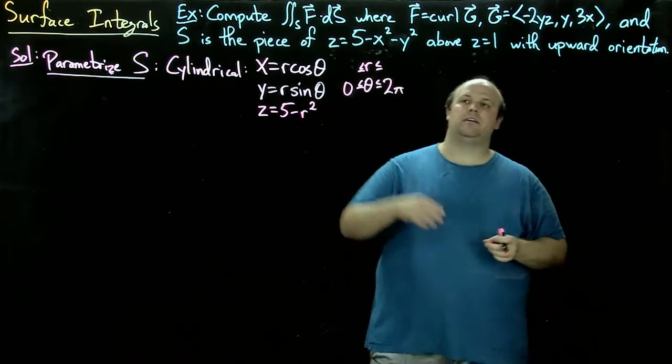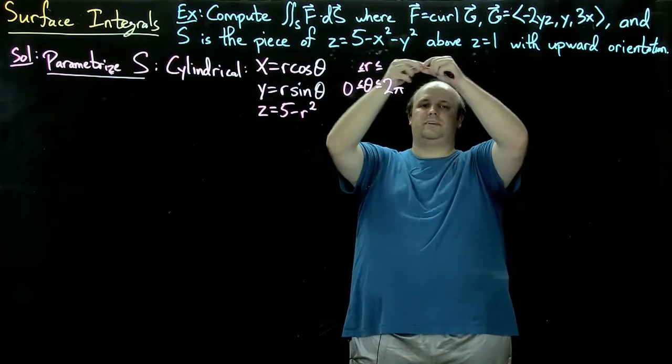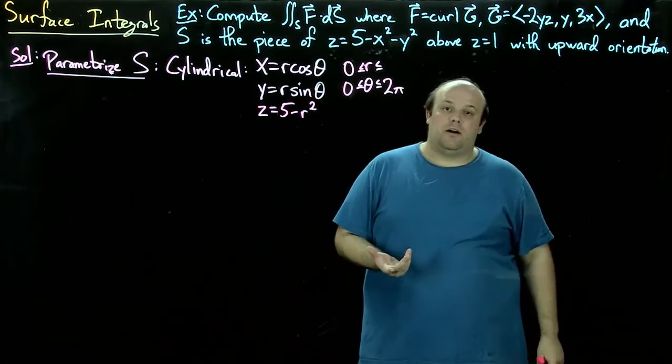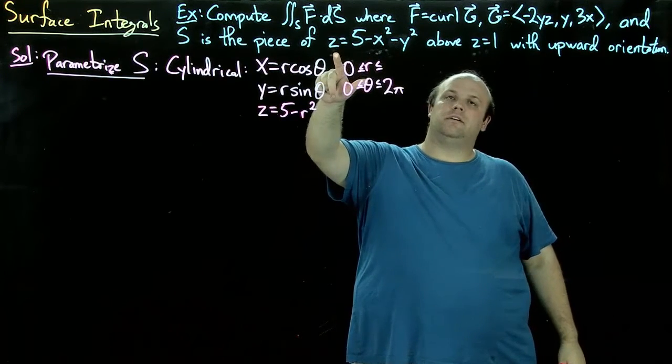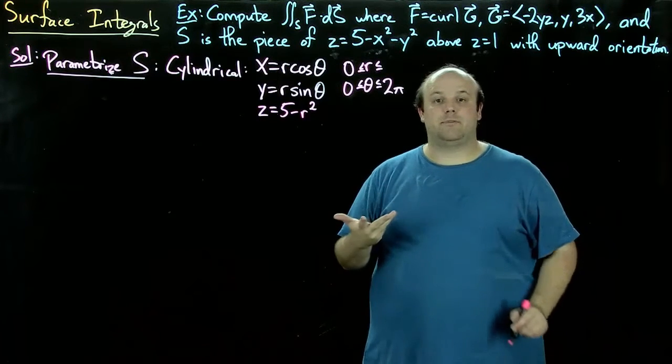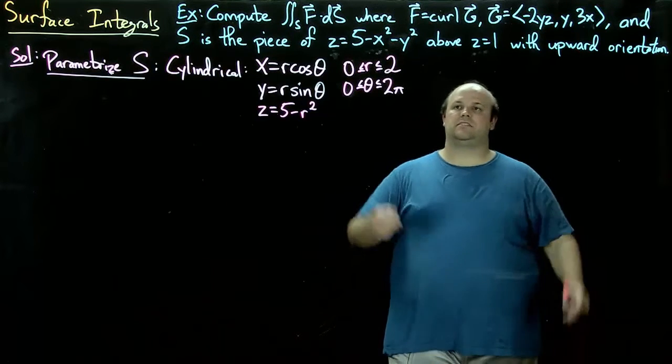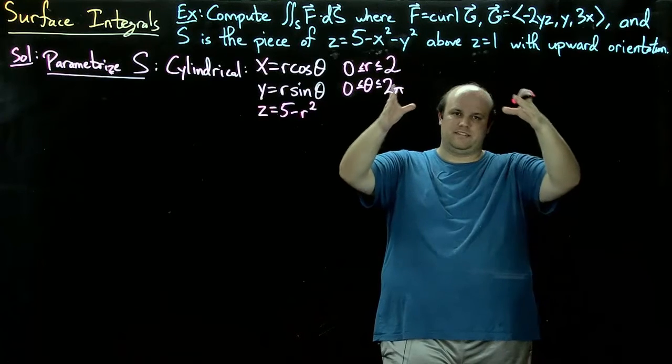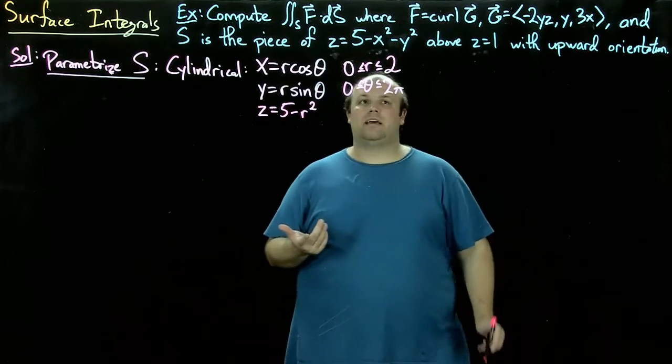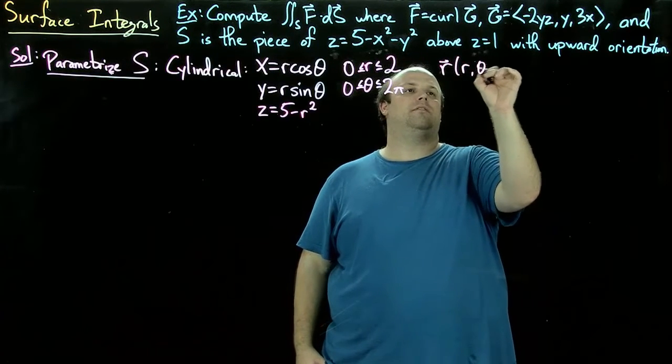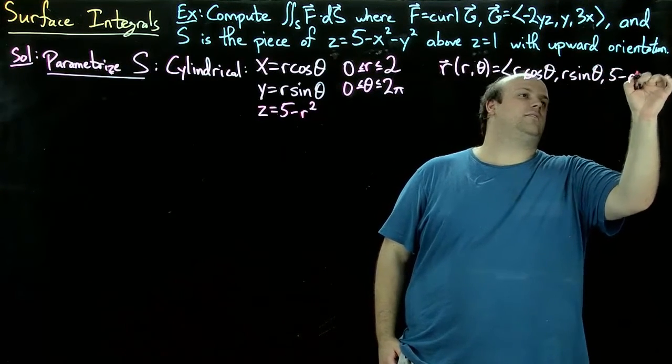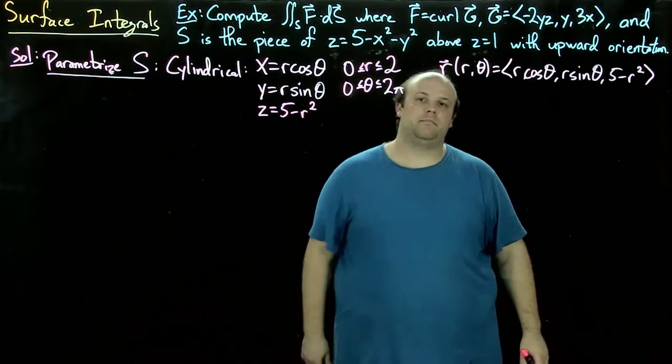This is an upside-down paraboloid that opens downward. We start at the z-axis where r = 0, but as we make our way out, where do we stop r? We find the intersection of these two surfaces. Plugging in z = 1, we get x² + y² = 4, so the radius goes from 0 to 2. Our parametrization is r(r,θ) = ⟨r cos θ, r sin θ, 5 - r²⟩.